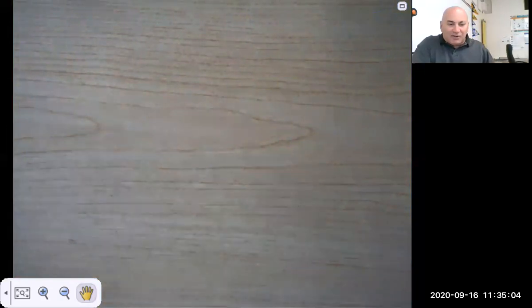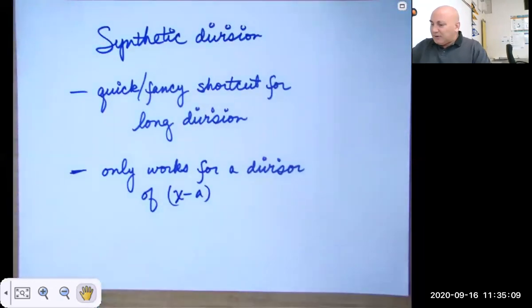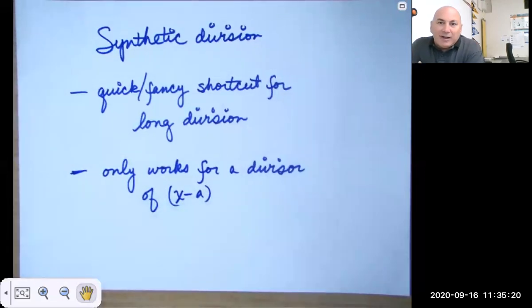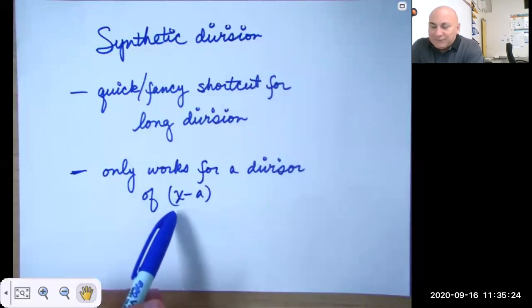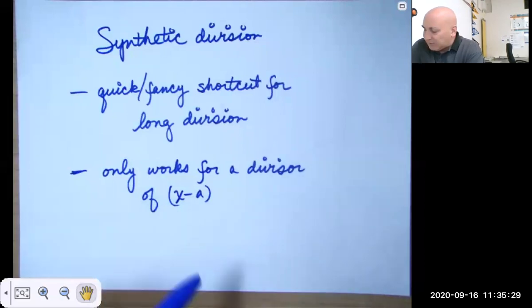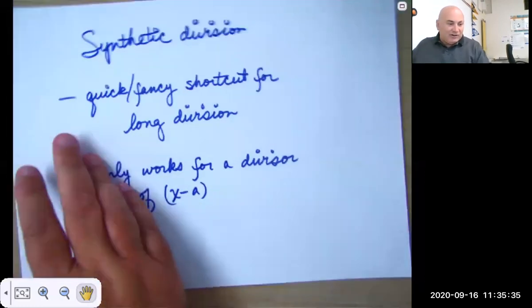Now polynomial long division, I hope that is not new to you. There's another shortcut called synthetic division, and it only works if you're dividing by x minus a constant. If you're dividing by 3x minus 7, I'll show you what we have to do later in this lesson. But if you're dividing just by x minus a, then synthetic division is a shortcut.